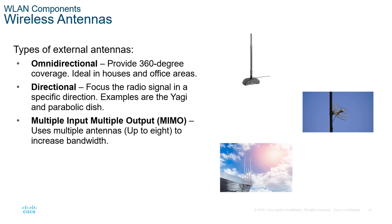Antennas are not all equal. There are three main types: omnidirectional, which provides 360-degree coverage; directional, which focuses signal in a specific area; and MIMO — Multiple Input, Multiple Output — which uses multiple antenna types to increase bandwidth by allowing them all to work together.